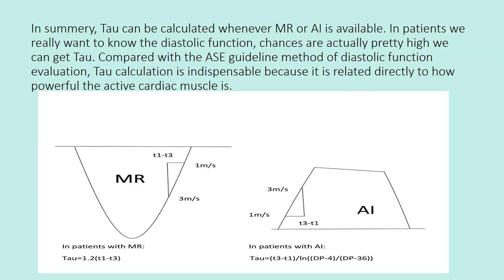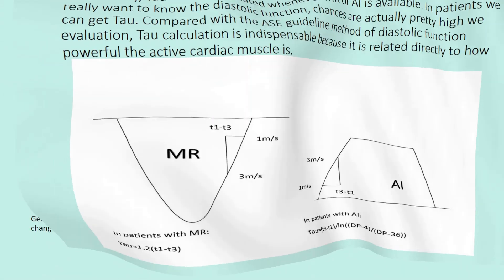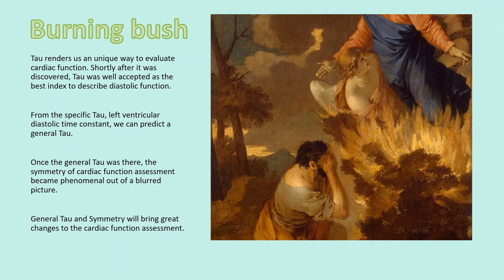Compared with the ASE guideline method of diastolic function evaluation, tau calculation is indispensable because it is directly related to how powerful the active cardiac muscle is. Tau renders us a unique way to evaluate cardiac function, and shortly after it was discovered, it was well accepted as the best index to describe diastolic function.